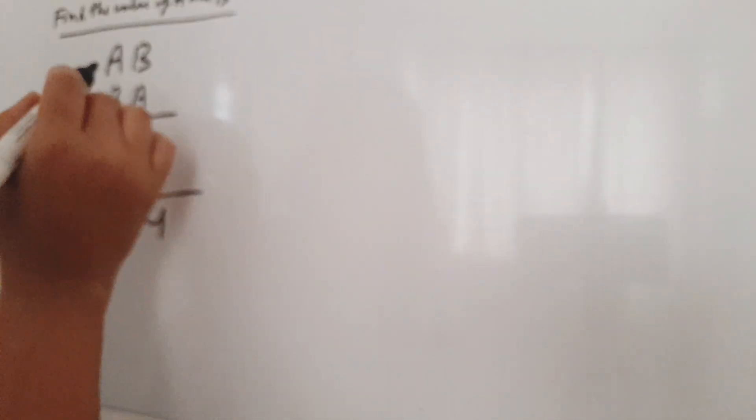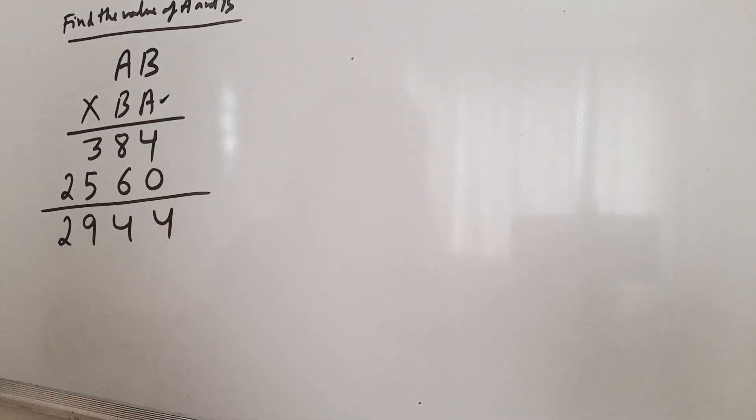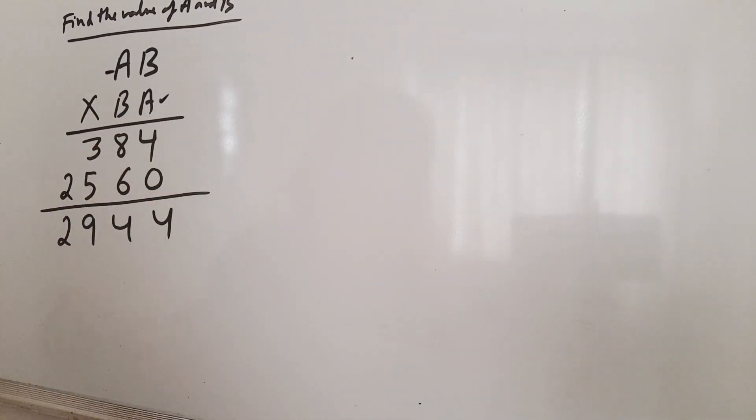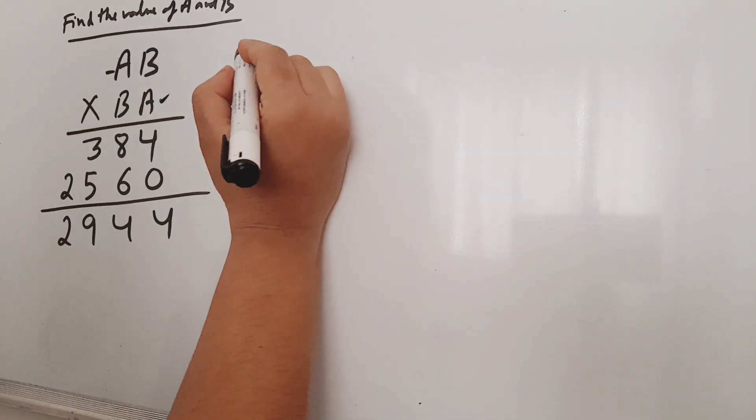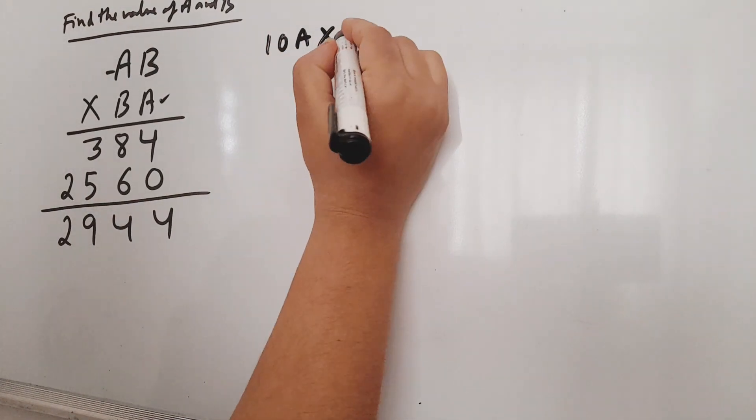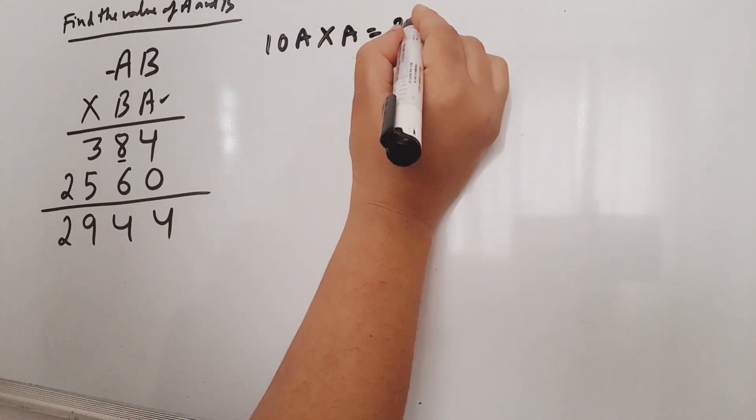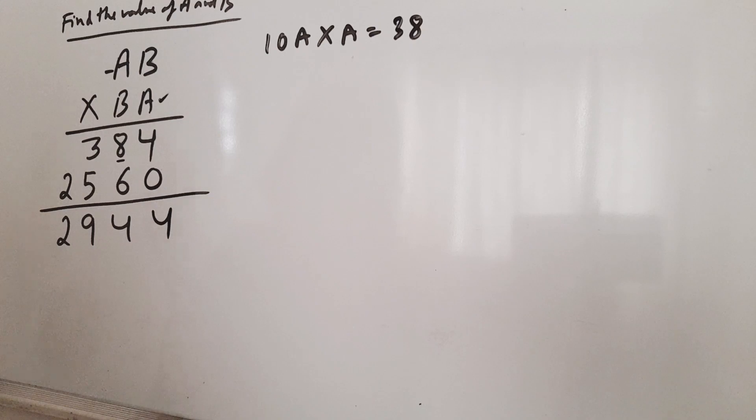Friends, we will focus on the unit place. This unit place, and this unit place. So what do we mean? This score and this score multiply. 10A into A, the unit place.